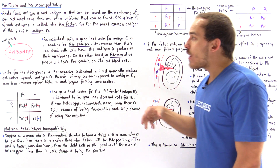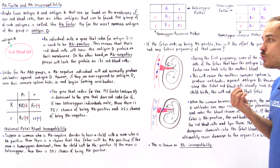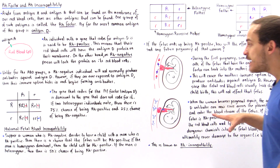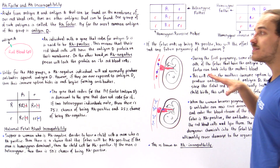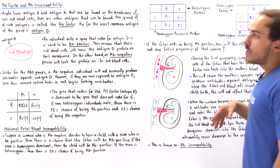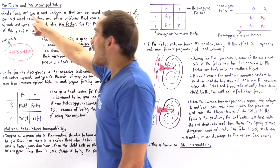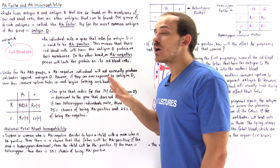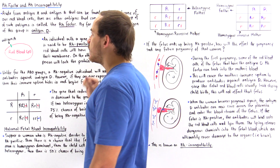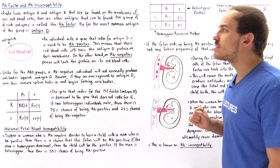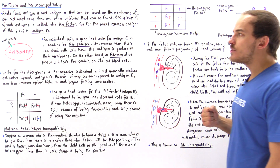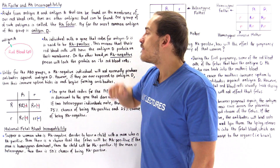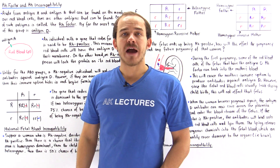We can see how the immune system, in trying to protect the body, can actually damage the fetus during a second pregnancy. To conclude: antigen A and antigen B are not the only antigens found on the membrane of red blood cells. Another type of antigen is antigen D, which is part of a group of antigens found in humans known as the Rh factor.